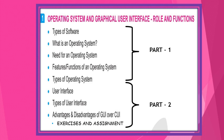Chapter 1. As you can see in the image, I have mentioned two parts here: Part 1 and Part 2. In Part 1, we will discuss a few topics of this chapter — Types of software, what is an operating system, need for an operating system, features and functions of an operating system, and types of operating system. In Part 2, we will discuss user interface, types of interface, advantages and disadvantages of GUI over CUI, and exercises and assignments.